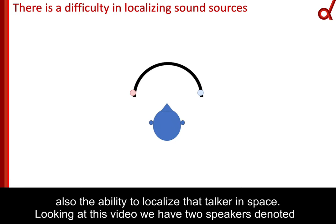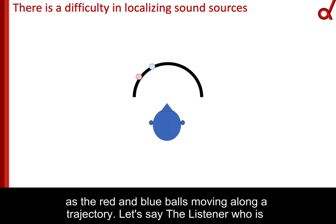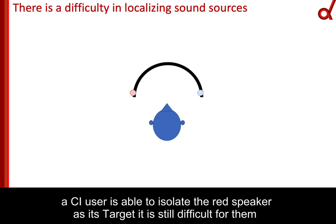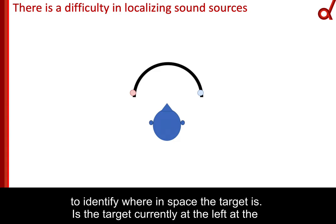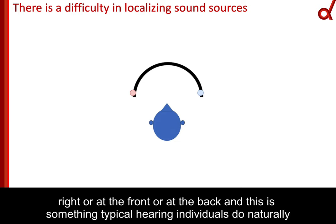Looking at this video, we have two speakers denoted as the red and blue balls moving along a trajectory. Let's say the listener who is a CI user is able to isolate the red speaker as their target. It is still difficult for them to identify where in space the target is — whether the target is currently at the left, the right, the front, or the back. This is something typical hearing individuals do naturally.